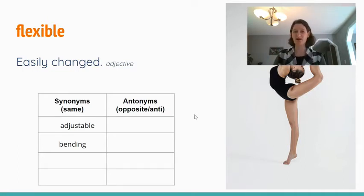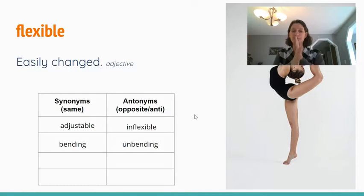The opposite or antonyms are inflexible, so not easily changed. Unbending. Could even be rigid or stiff. Those are the opposite of flexible.